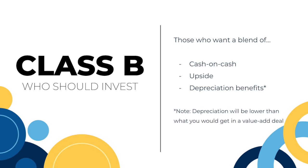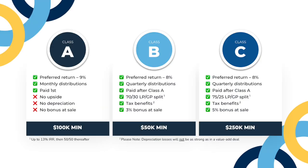Class B is great for people who want a mix of cash flow and upside. You're able to get an 8% preferred return, which is slightly lower than Class A, quarterly distributions, and that 70-30 LP-GP split — 70% to you the LP, 30% to us the GP, up to that 13% IRR, then 50-50 thereafter. For this class, you'll also be able to take advantage of some standard normalized depreciation from this property. It's not going to be a whole lot compared to some of our other value-add properties, but at tax time you can offset a little bit of income with that depreciation, so it's a nice little bonus.